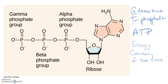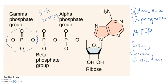What I want you to understand about the structure of ATP is this last phosphate group. The bond between the second and third phosphate is a very important high-energy bond. Since energy can't be created or destroyed, when that bond is broken, a great deal of energy is released — and that is what the cell uses to do cellular work.